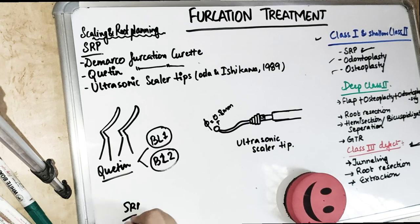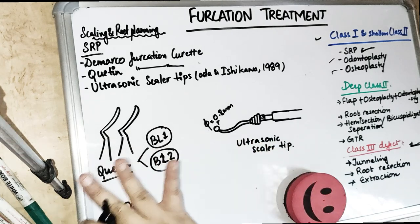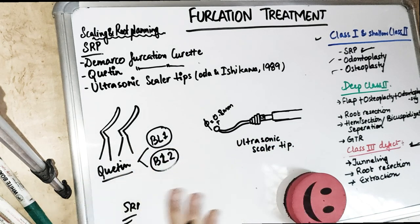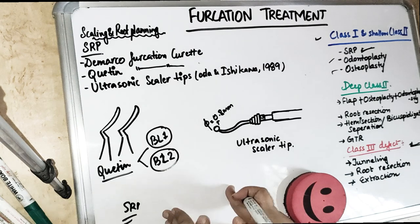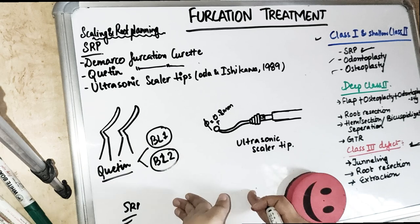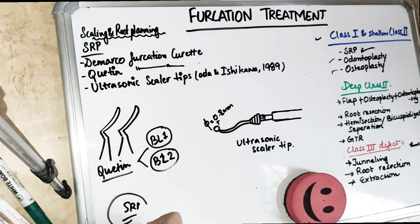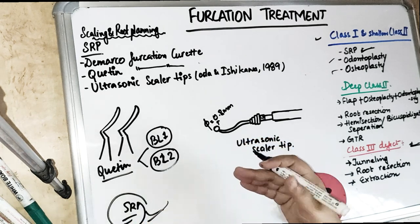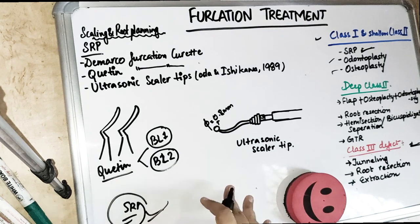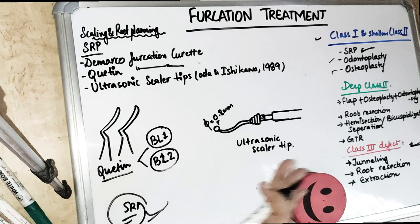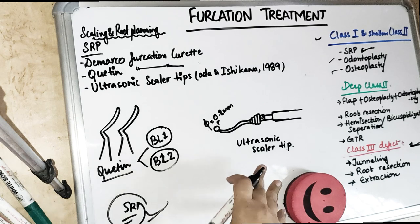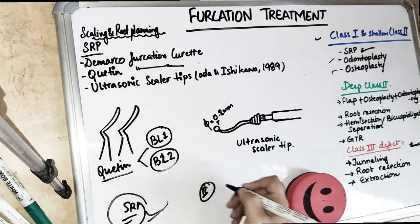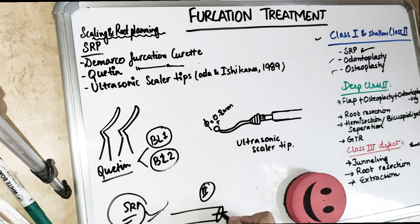We do scaling and root planing not only for Grade 1, but also for Grade 2, 3, and 4. I have been telling you from day one of the perio lectures — if you want to do any surgical approach, the first thing you need to do is scaling and root planing, because it is going to resolve all of the inflammatory responses. Once we remove the plaque, there is going to be a subsidence in the inflammation.